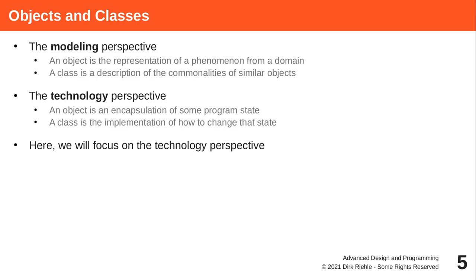Historically, the modeling perspective has been called the European perspective, mostly driven out of the Scandinavian school, and the technology perspective is perhaps the American perspective. In modeling, an object represents something from the real world or some domain, and a class captures the commonalities of similar objects through an abstraction process.